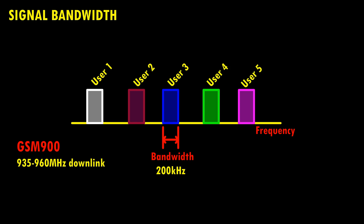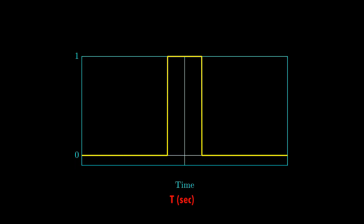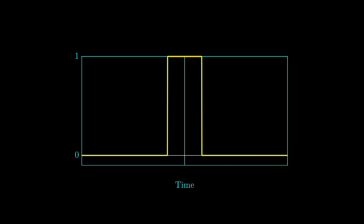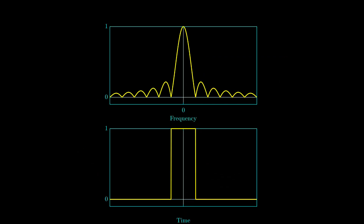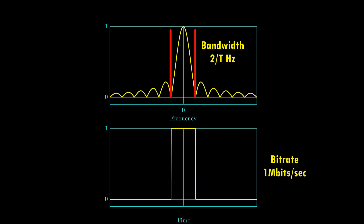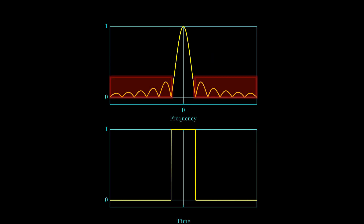But how does this relate to the transmitted signal bit stream? To understand the relationship between transmitted data and bandwidth, let's assume we are transmitting a logic 1 for a time duration of T seconds. This means the data rate of the transmission is 1/T bits per second. It can be shown mathematically that the frequency-domain representation of this bit will have a main lobe with a bandwidth of 2/T Hz. So for example, if the bit rate was 1 megabit per second, this corresponds to a bandwidth of 2 MHz. In the digital domain, we can also see some side lobes in the frequency spectrum of the bit stream.